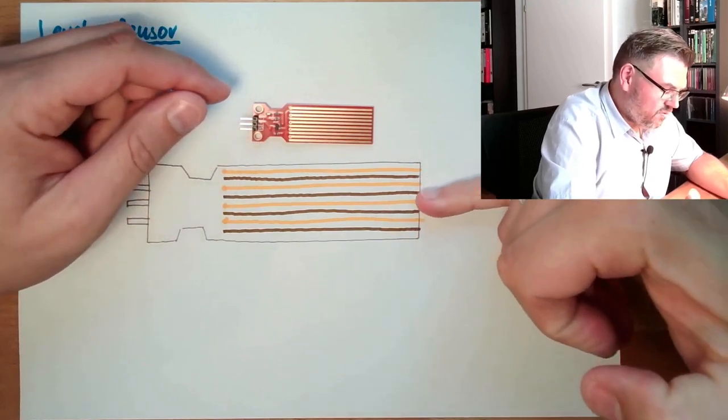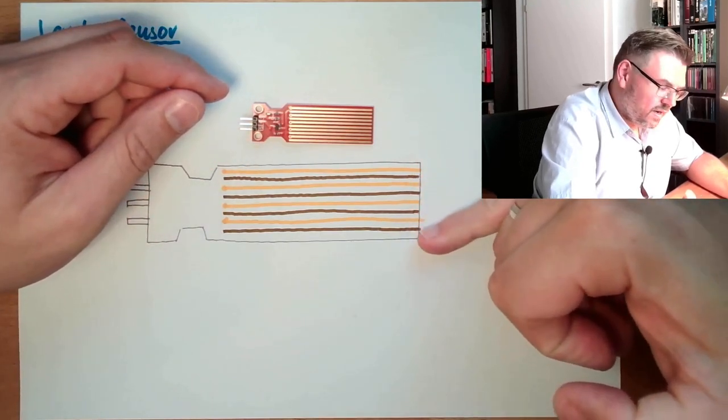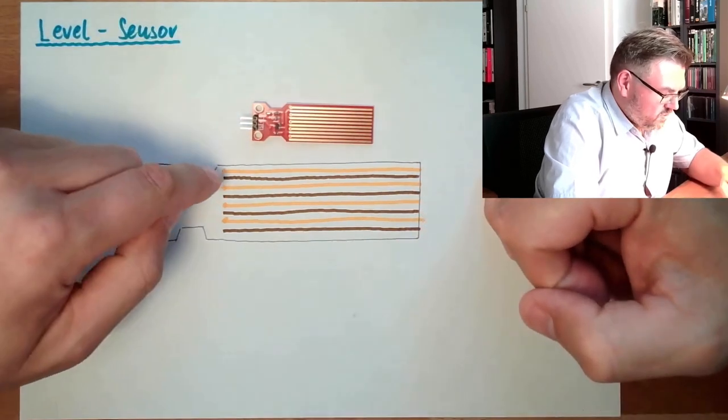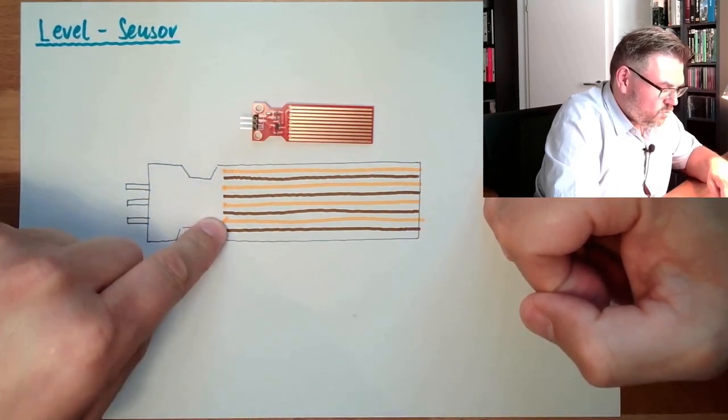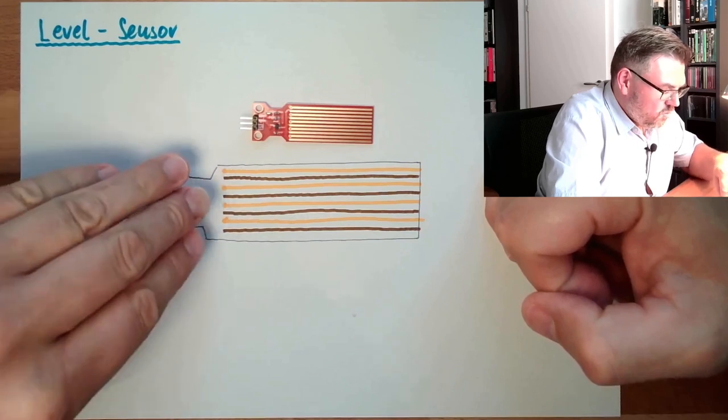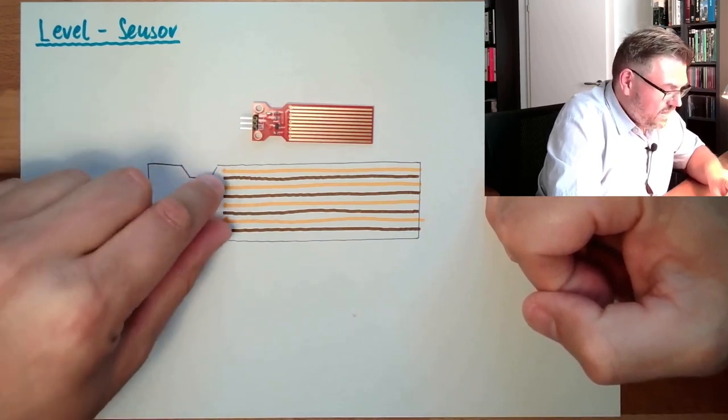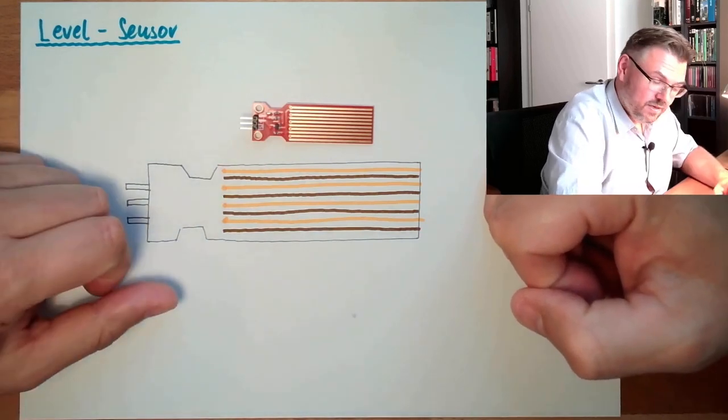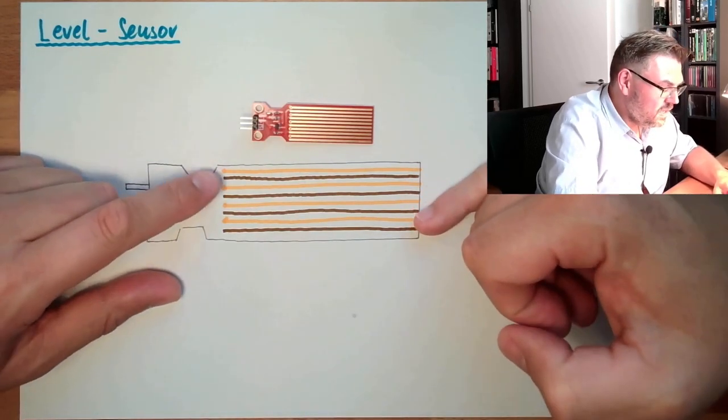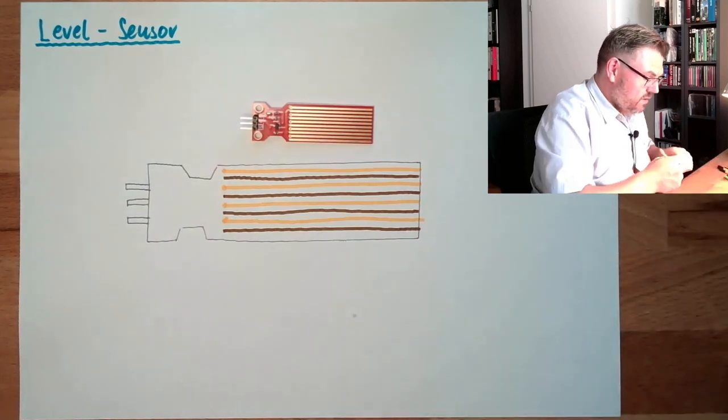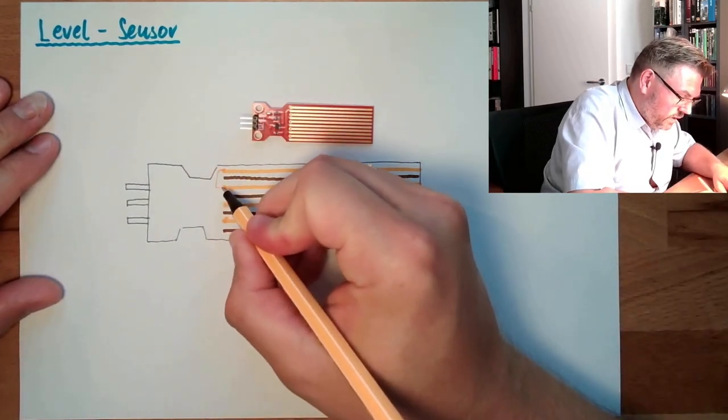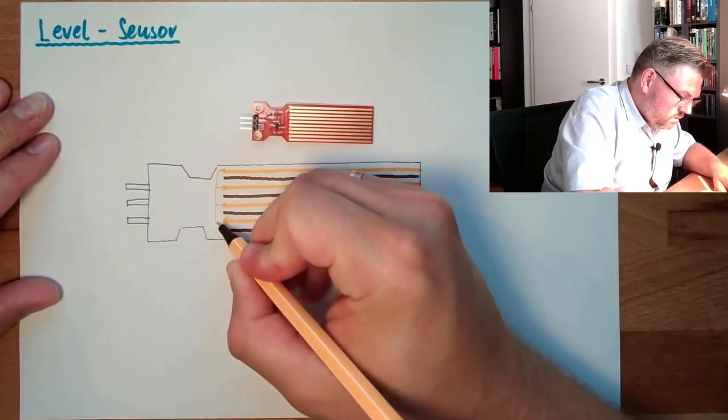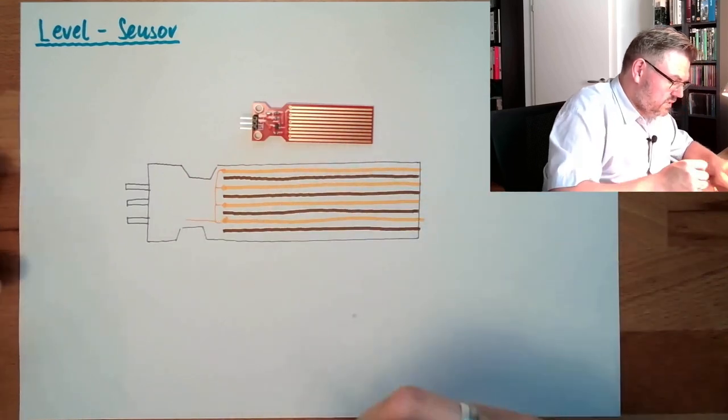And important is that every second surface belongs to the other side. So here I tried to show it with the colors. So every second one is one side and the other side is the other second one, the ones in between. So the orange ones, they are connected together here. So they are all connected here. This is one side.